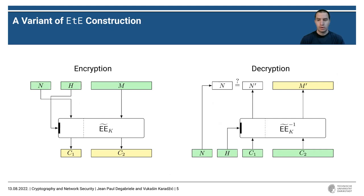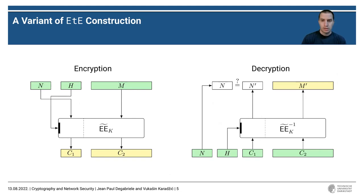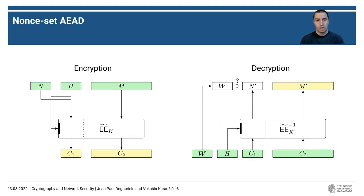We consider a variant of the ETE construction where one encrypts the nonce during encryption, and during decryption uses the nonce provided to the decryption algorithm as a redundancy for the authenticity check. This gave rise to a new AAD primitive we call Nonce Set AAD, where instead of a single nonce, a nonce set is provided to the decryption algorithm, and one checks if the decrypted nonce is in the provided nonce set.